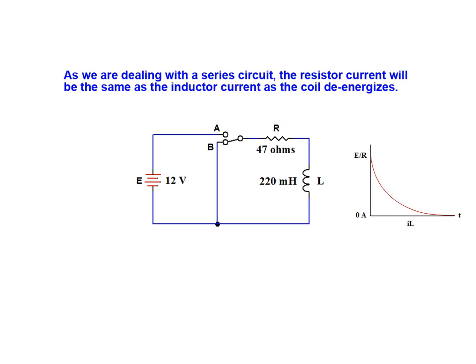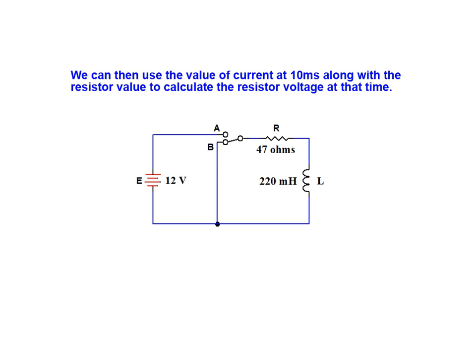As we're dealing with a series circuit, the resistor current will be the same as the inductor current as the coil de-energizes. We can therefore use the value of the inductor current at 10 milliseconds along with the resistor value to calculate the resistor voltage at that time.